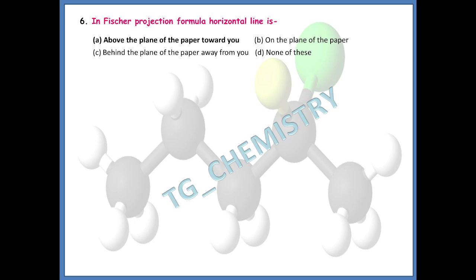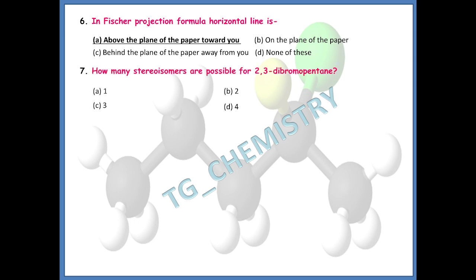The next question asks: how many stereoisomers are possible for 2,3-dibromopentane? The right answer is option D — four stereoisomers are possible for 2,3-dibromopentane.